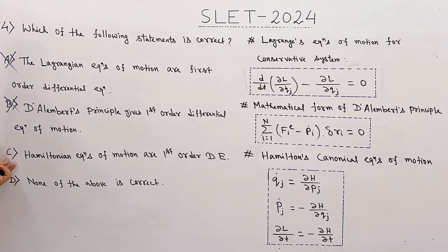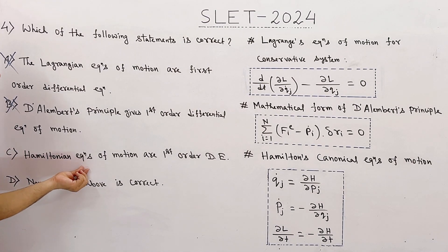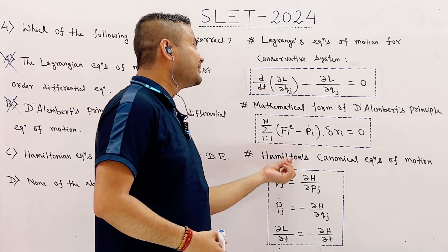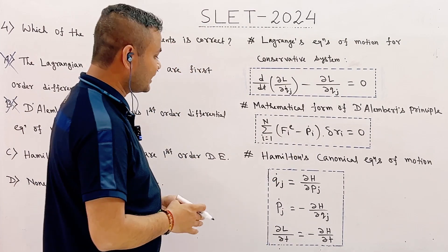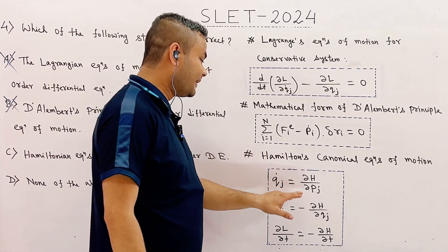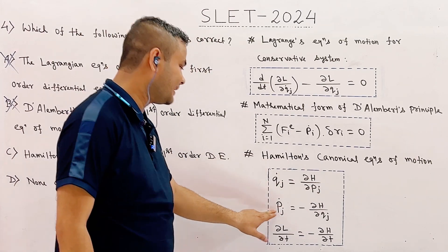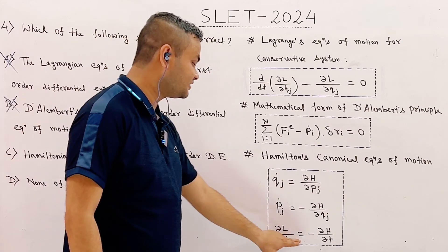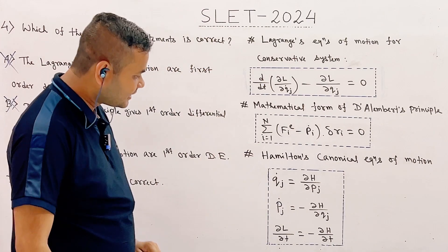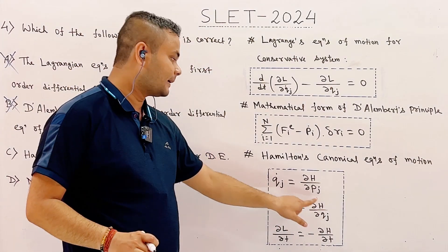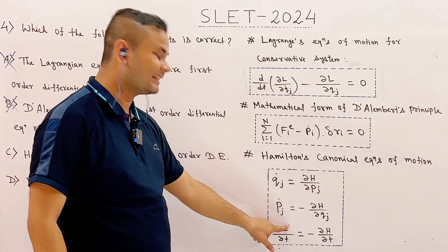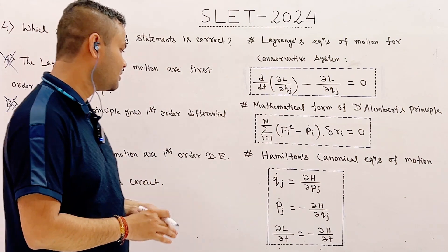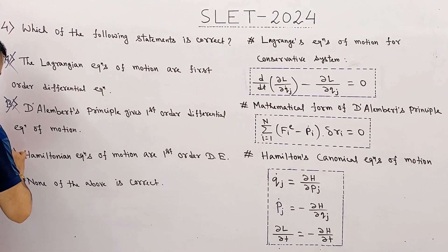Option c states that Hamiltonian equations of motion are first order differential equations — this is correct. Hamilton's canonical equations are: Q̇ⱼ = ∂H/∂Pⱼ, Ṗⱼ = −∂H/∂Qⱼ, and ∂L/∂t = −∂H/∂t, where Qⱼ are generalized coordinates, Pⱼ are generalized momenta, L is the Lagrangian, and H is the Hamiltonian of the system. Therefore option c is the correct answer.